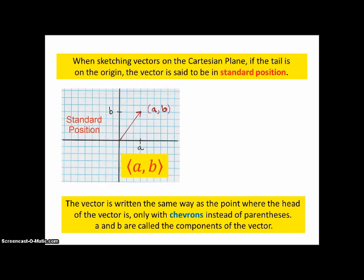A and B are called the components of the vector. Now some books don't use the chevrons. They just use parentheses, which annoys me a little bit because it makes it harder to tell whether they're talking about a point or a vector. So I will use chevrons.